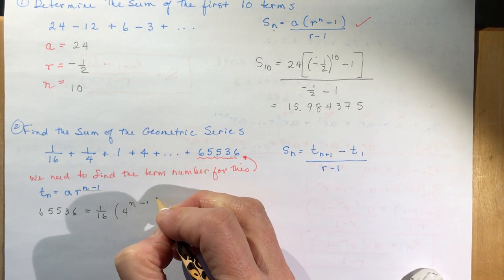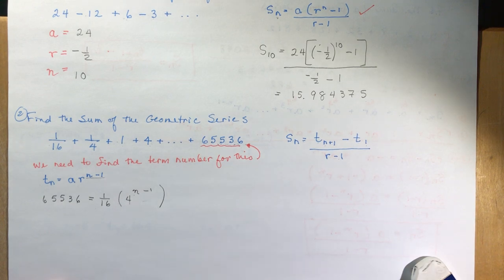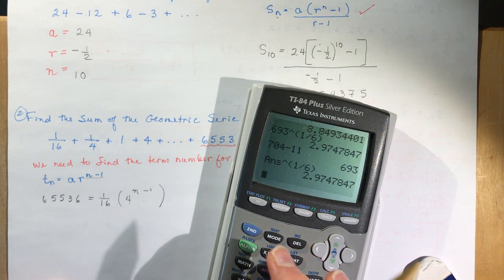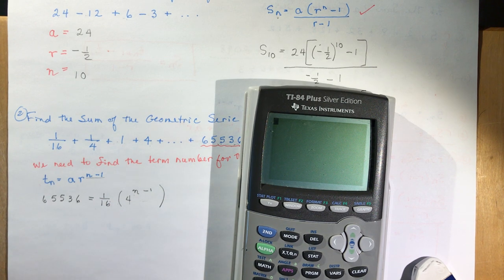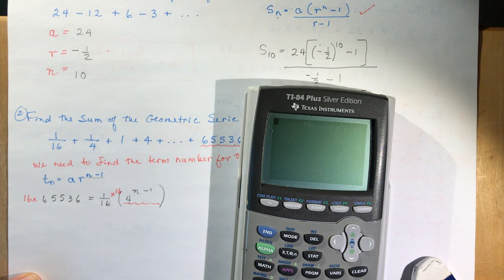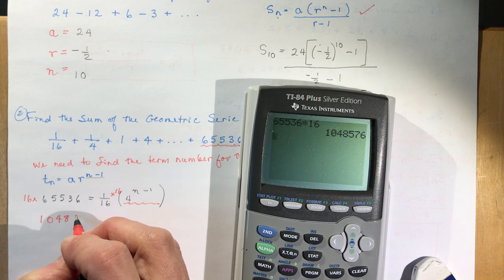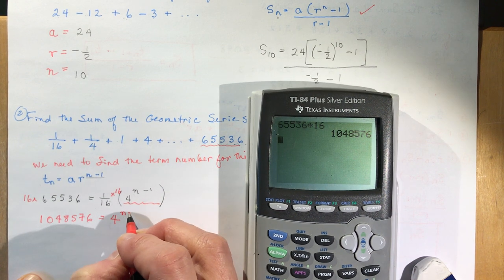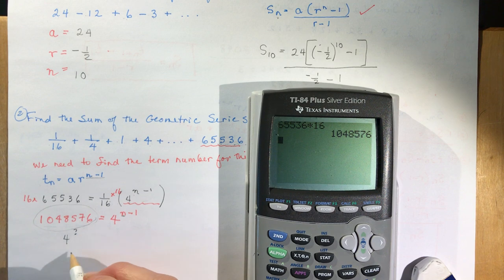So: tn equals a times r to the n minus 1. I'm going to get rid of the 1/16 by multiplying both sides by 16. So 65536 times 16 gives me — a big number — 1,048,576, which equals 4 to the n minus 1. Now remember, the term number n has to be a whole number, so this side has to be 4 to some whole number power.